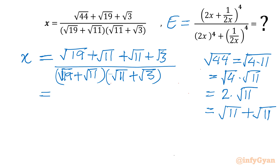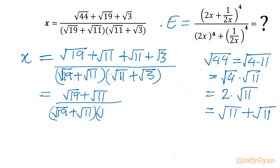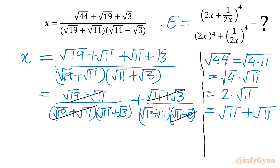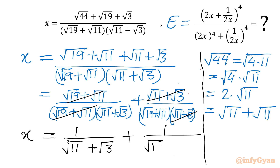Now I will split the numerator. I write (√19 + √11) over (√19 + √11)(√11 + √3), plus (√11 + √3) over (√19 + √11)(√11 + √3). Cancelling common factors, x becomes 1/(√11 + √3) + 1/(√19 + √11).